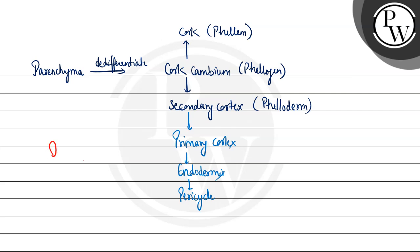Intrastelar region mein yeh jo vascular bundles present honge, yeh complete cambial ring banate hain by the joining of inter and intrafascicular cambium. Intrafascicular cambium ke is taraf yeh primary xylem present hai aur yeh primary phloem. Aur yeh primary phloem aur xylem ke beech mein yeh jo cambium hai,